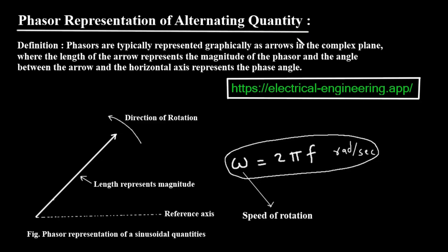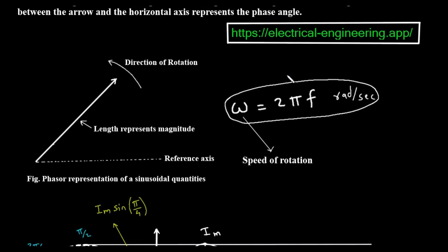The definition states: phasors are typically represented graphically as arrows in the complex plane, where the length of the arrow represents the magnitude of the phasor and the angle between the arrow and the horizontal axis represents the phase angle. Let's break that down with the diagram shown. Imagine an arrow, or what we call a vector, starting from a central point, the origin. This arrow is our phasor.